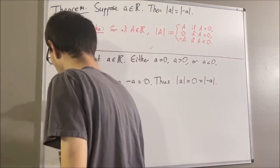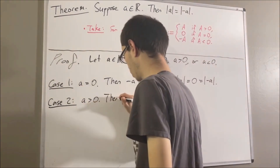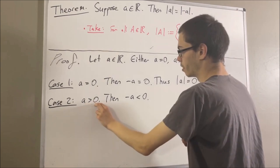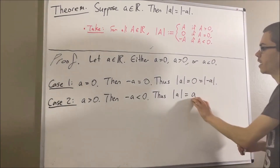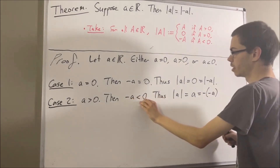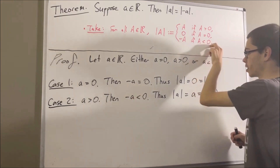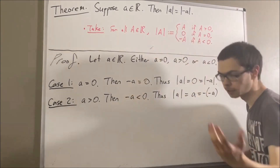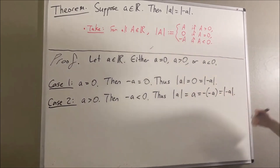Let's move on to the case where A is greater than zero. Since A is greater than zero, we know that negative A is less than zero. Applying the definition of absolute value: since A is greater than zero, by definition the absolute value of A is equal to A. But A is equal to the negative of the negative of A. And since negative A is less than zero, when we apply the definition of absolute value to negative A, we put a minus sign in front of it. So the absolute value of negative A is equal to the negative of negative A. Thus the absolute value of A is equal to the absolute value of negative A. This completes the case where A is greater than zero.